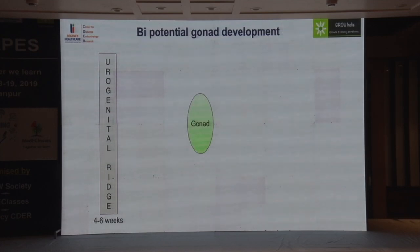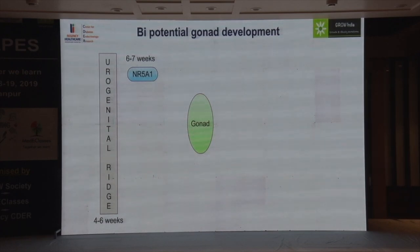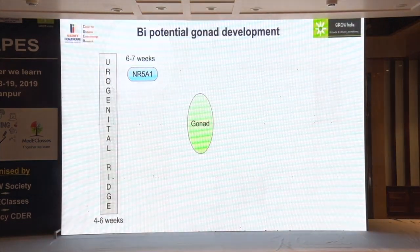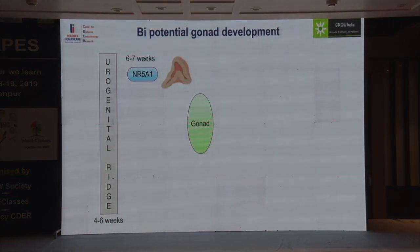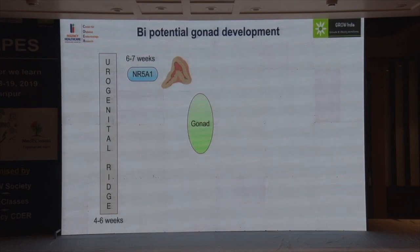There are some players which lead to development of what is known as a bi-potential gonad — the initial gonad can become either testes or ovaries. NR5A1, active at six to seven weeks, plays a role in both gonadal and adrenal development. If you have a problem in this gene, you will have adrenal insufficiency as well as abnormalities in gonadal development. It may present only as DSD, but we need to assess for adrenal function carefully.